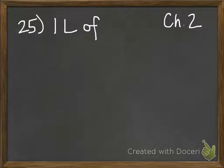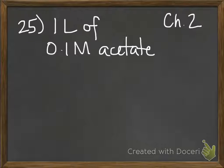So for number 25 in chapter 2, you're asked to create a solution that's 1 liter of 0.1 molar acetate, and they want it at pH 4.